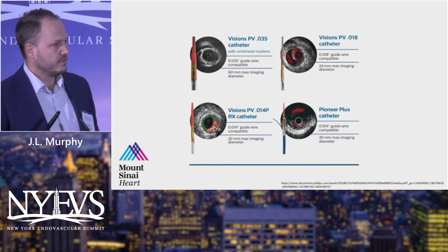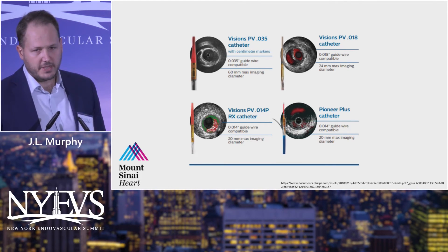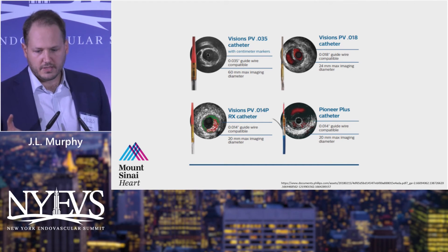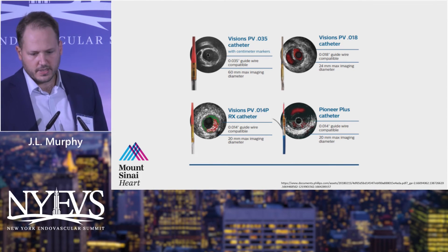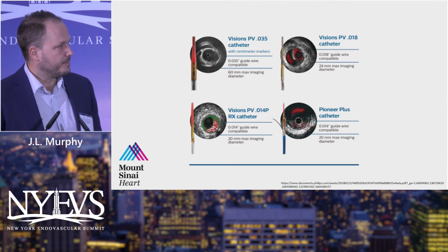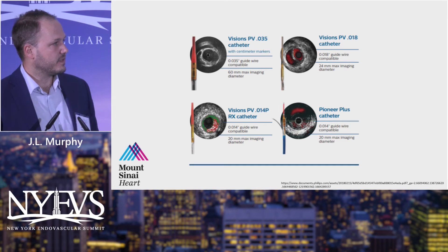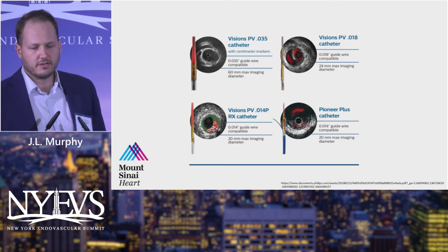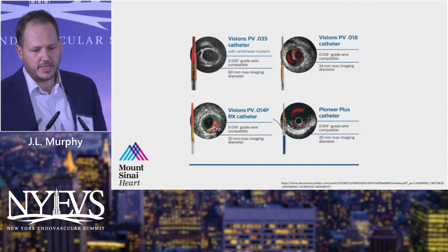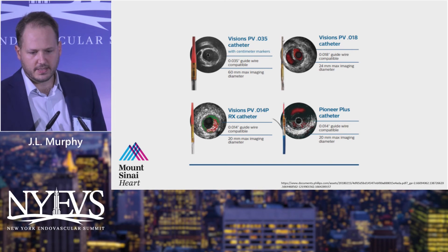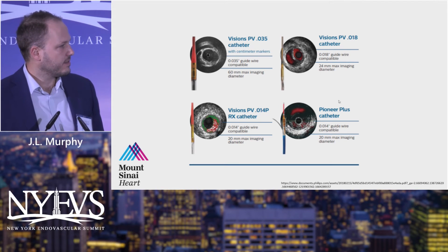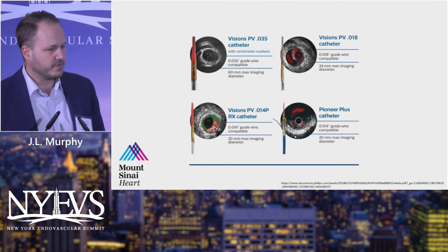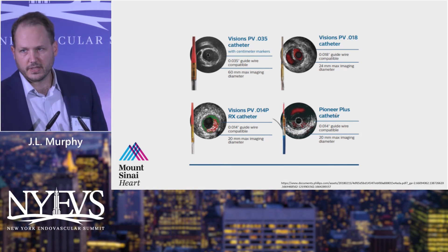At Sinai we have a couple of different catheters we can use — these are the Philips catheters. In the peripheral space there are options with different imaging depths. For arterial interventions we most commonly use the 0.014 and 0.018 compatible catheters, which have 24 and 20 millimeter maximum imaging diameters. There is a 0.035-compatible catheter used more in venous cases with a 60mm max imaging depth but requiring a bigger sheath. There is also the Pioneer catheter, which combines IVUS with a wire lumen and needle for re-entry — very useful for CTOs where you need to re-enter from the subintimal space.